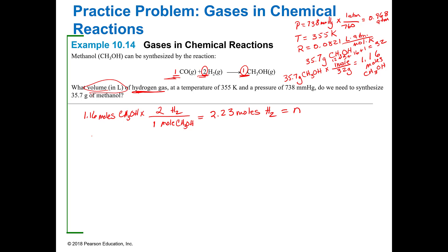So N is 2.23 moles times R times temperature, all divided by pressure in atmospheres. When I plug my numbers in, and you should do that always to make sure you're getting the same thing, I got 67.1 liters.